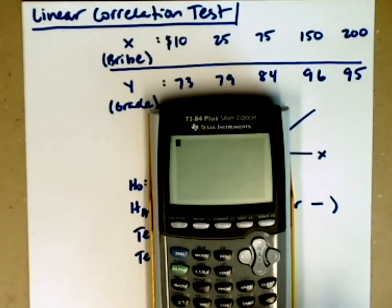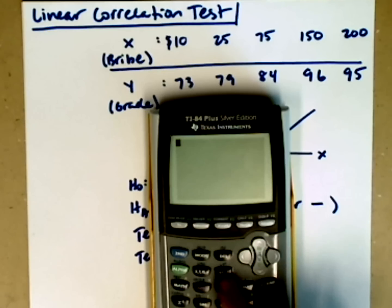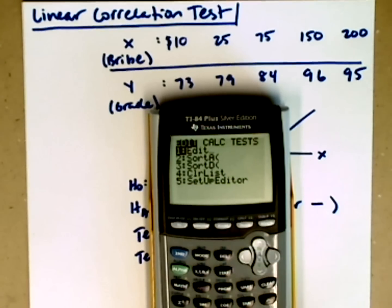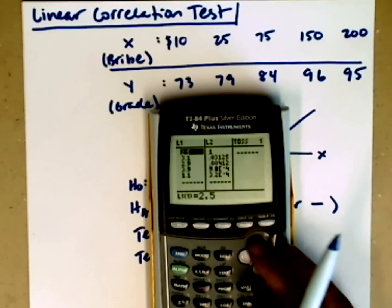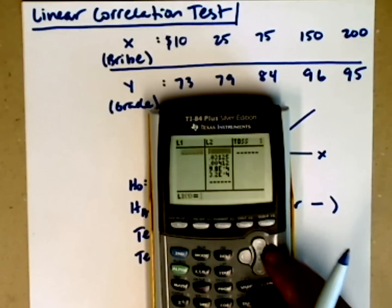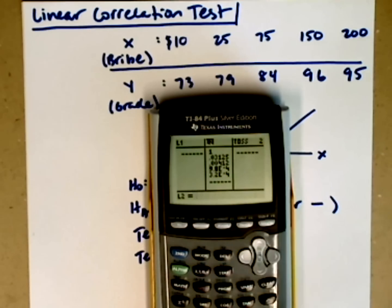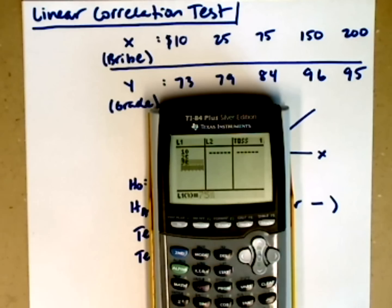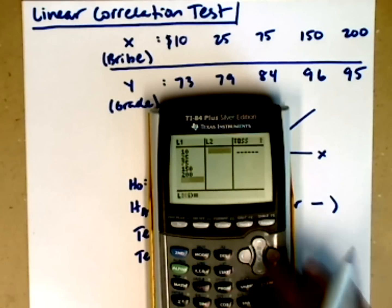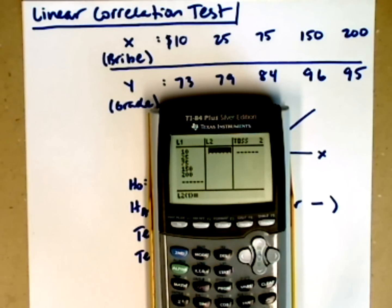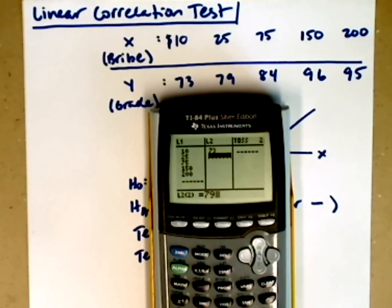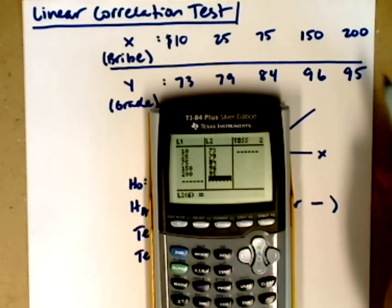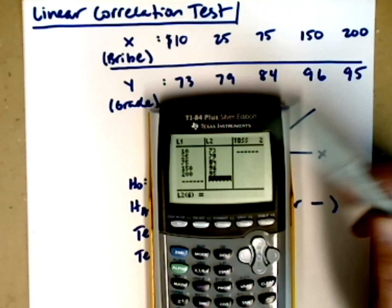As I turn my calculator on, I'm going to go into stat and edit so I can enter my data values. I need to clear the lists that I have. I'm just going to enter my x values into L1 and my y values into L2. So 10, 25, 75, 150, 200, and then for my grades I've got 73, 79, 84, 96, and 95. We're wondering if that 95 is going to throw us off at all. I'm going to be checking my values. It looks like I've got them in there correctly.